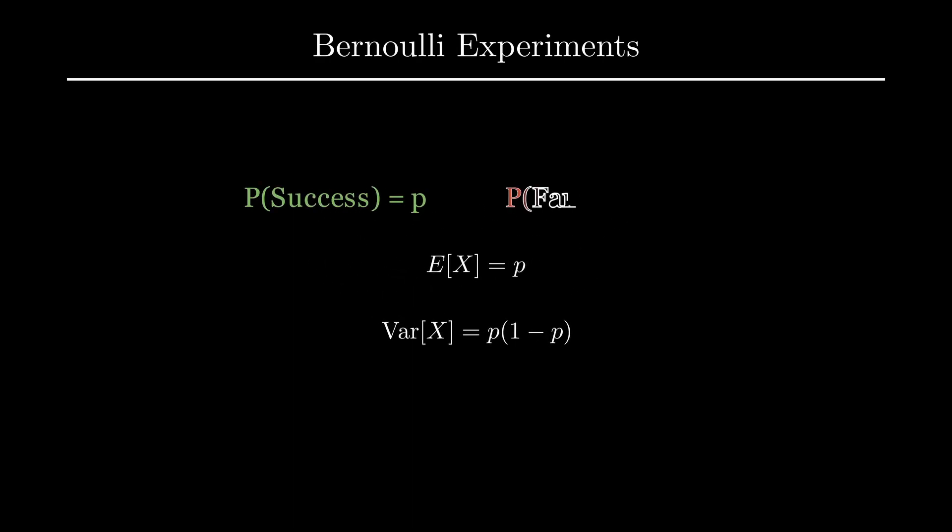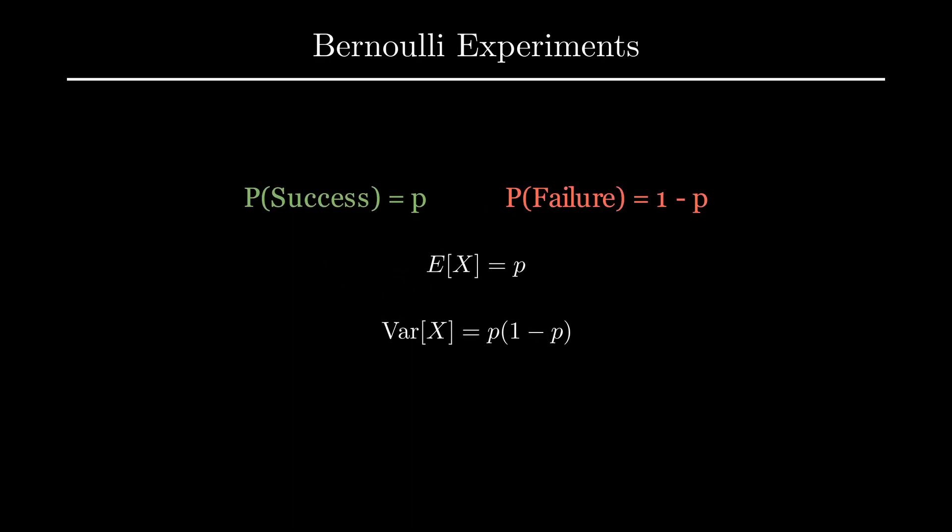In short, for a Bernoulli experiment: the probability of success is p, the probability of failure is 1 minus p, the expected value of the experiment is p, and the variance is p times 1 minus p.